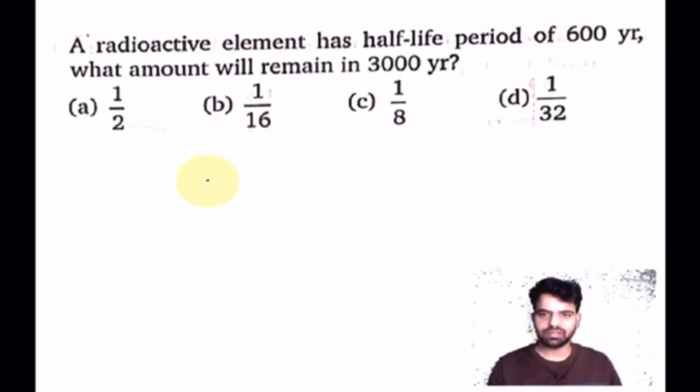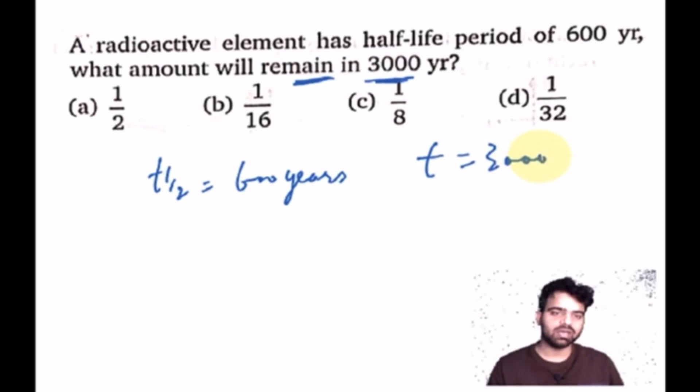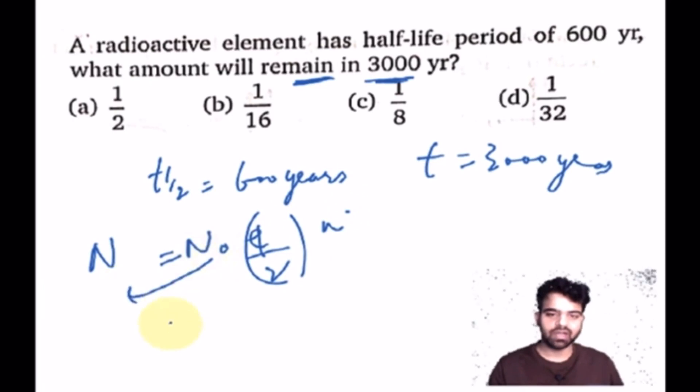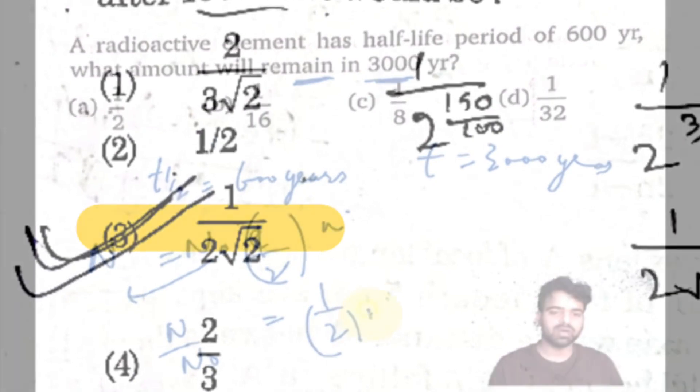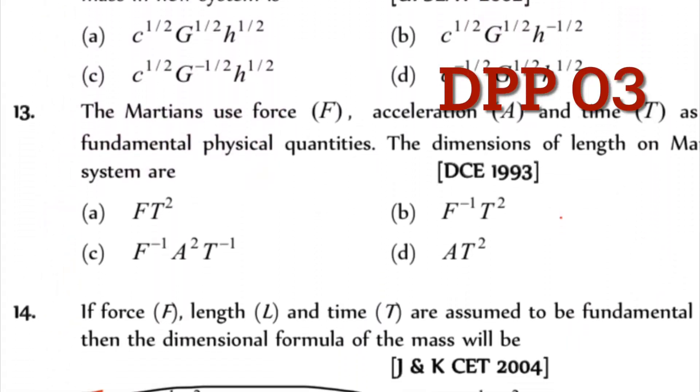This half-life T₁/₂ is 600 years. After 3000 years, what amount will remain present? N = N₀(½)ⁿ. The fraction present is N/N₀ = (½)ⁿ.